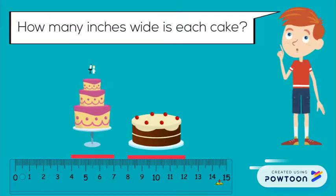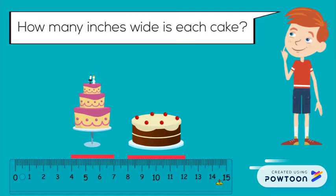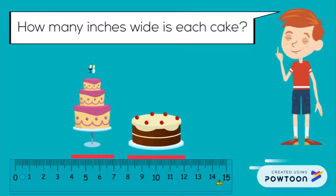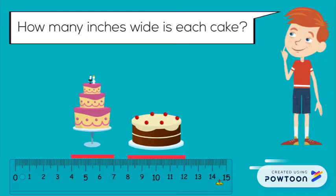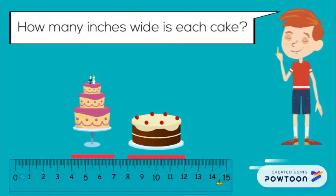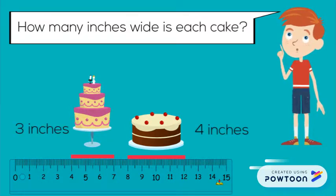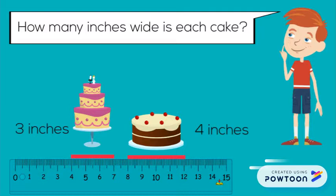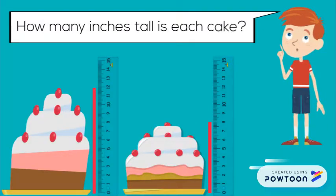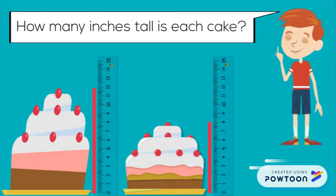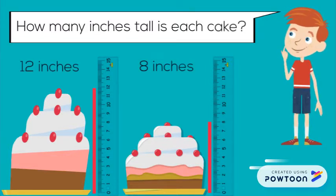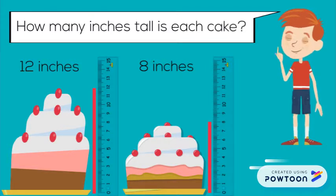How many inches wide is each cake? Three inches and four inches. How many inches tall is each cake? Twelve inches and eight inches.